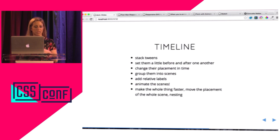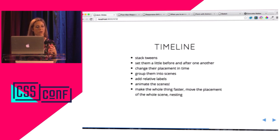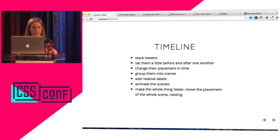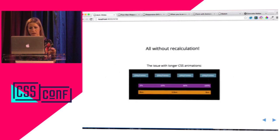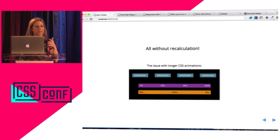Another really big reason for switching to GSAP is the timeline. You can stack tweens, set them a little before and after one another. You can change their placement in time, group them into scenes, add relative labels so you can say 'start' and have a bunch of things start at the same time. That gets really interesting with a long animation — like if it's 20 seconds and at 15 seconds you need everything to fire, but then you change that, in CSS that's all this recalculation, and you don't have to do that in GSAP. You can make the whole thing faster with one line of code.